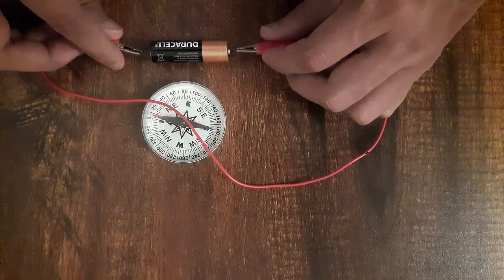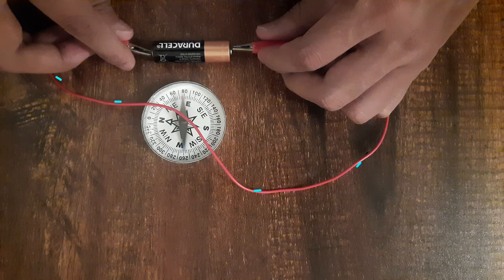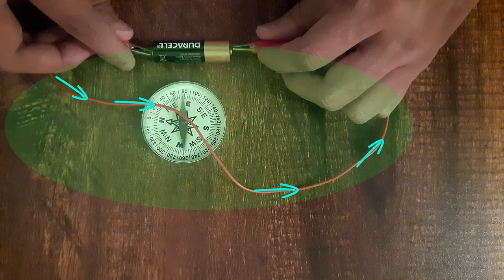So why did the needle inside the compass deflect? Well, it turns out when we brought the two ends of the wire in contact with the terminals of the cell, current started moving in the wire. As a result, there was a magnetic field generated by the wire that was carrying the current.